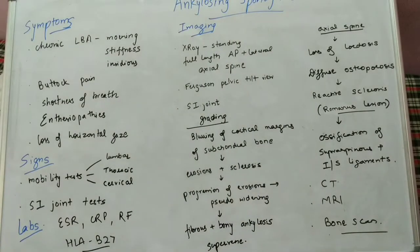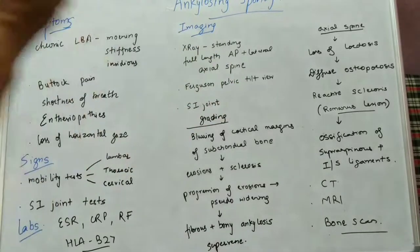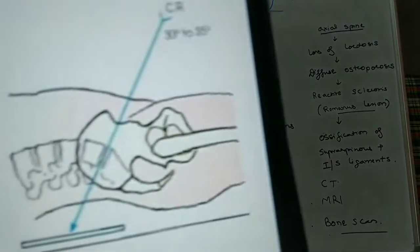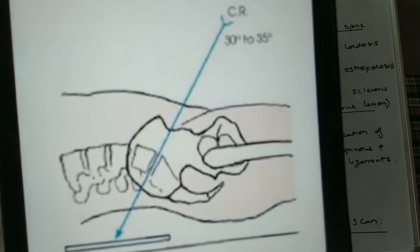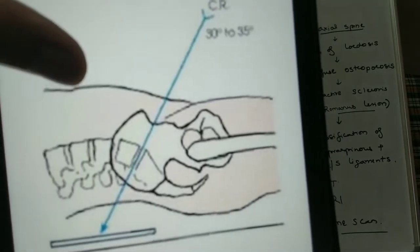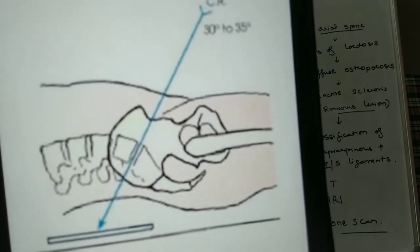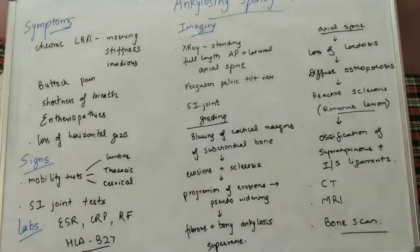Coming on to SI joint X-rays, we have the Ferguson pelvic tilt view. In the Ferguson pelvic tilt view, we go for 15 to 20 degrees of cephalic angulation to look for the SI joint. There are various X-ray grading systems for the SI joint.